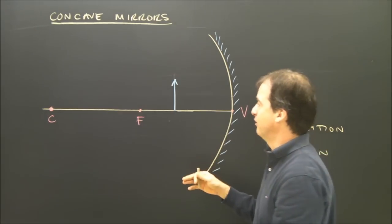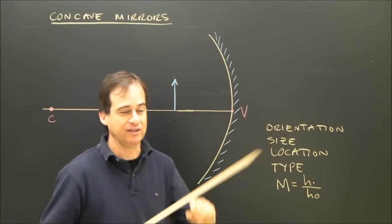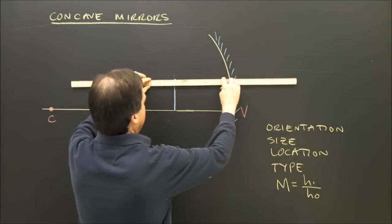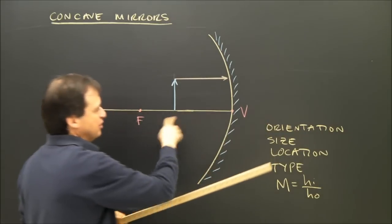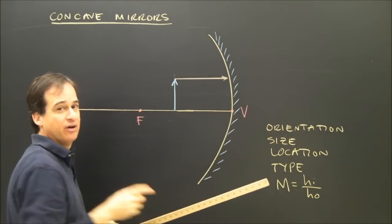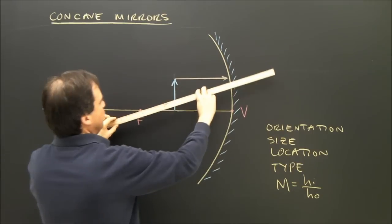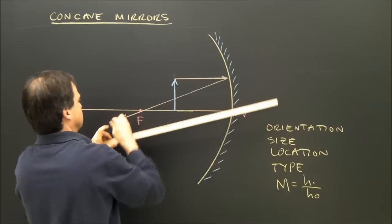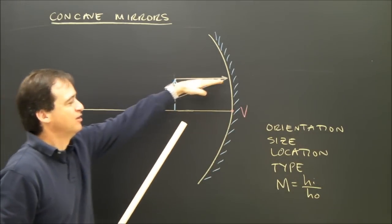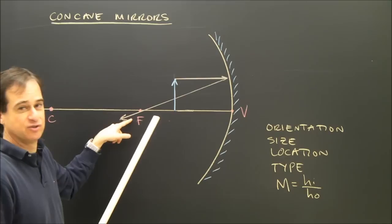I'm going to see what kind of image I get. I'm going to use two of my three rays. I'm going to use the parallel ray. That one hits the mirror, runs parallel to the axis, hits the mirror and reflects through the focus. So it's going to go this way. Parallel, hits the mirror, goes through the focus, which is over here.